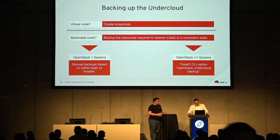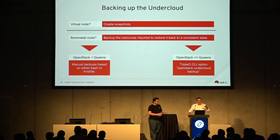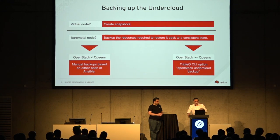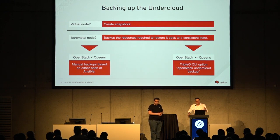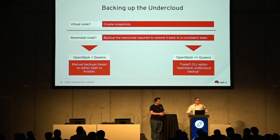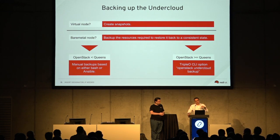How this works: we created a new CLI option in the python-tripleoclient, and we created a Mistral workflow with all the tasks required to run the undercloud backup. We do checks like verifying your undercloud has enough space to store the backup and confirming the backup was created correctly. We used Mistral workflows because we want to eventually integrate this into the TripleO UI, so an operator will be able to create the backup directly from the UI without needing to log into the terminal.